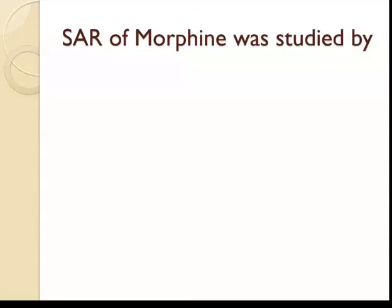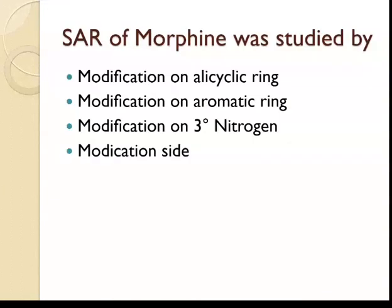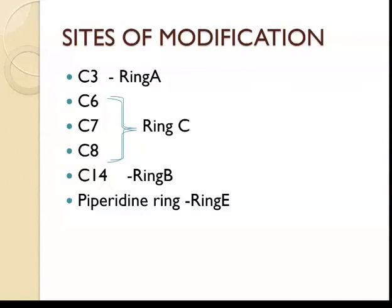The sites of modification include: modification on the alicyclic ring, modification on the aromatic ring, and modification on the tertiary nitrogen. The key positions are C3 in Ring A, C6 in Ring B, C7 and C8 in Ring C, C14 in Ring B, and the piperidine ring in Ring E.